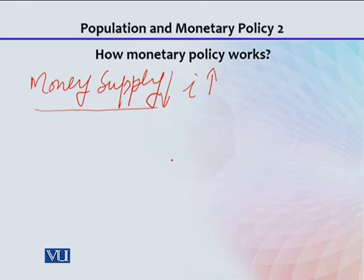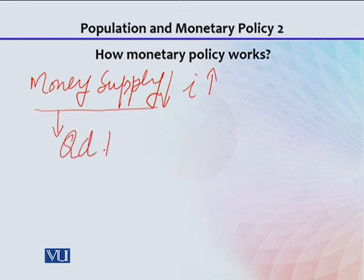When money supply is reduced or the rate of interest is increased — and rate of interest is basically the price of money — when the price of money increases, money supply decreases. When money supply decreases, people have less money in the market and they reduce their quantity demanded for goods.